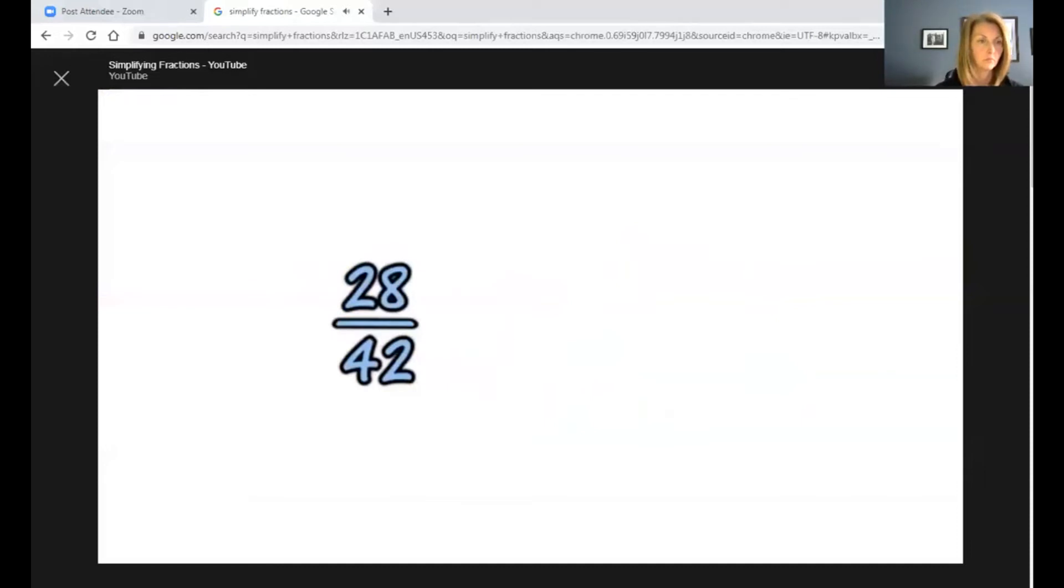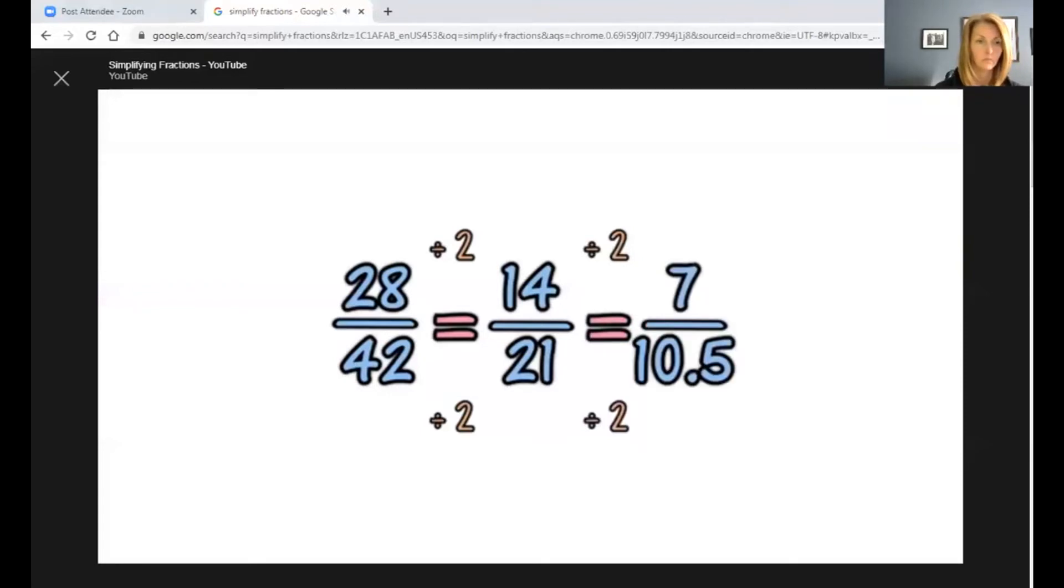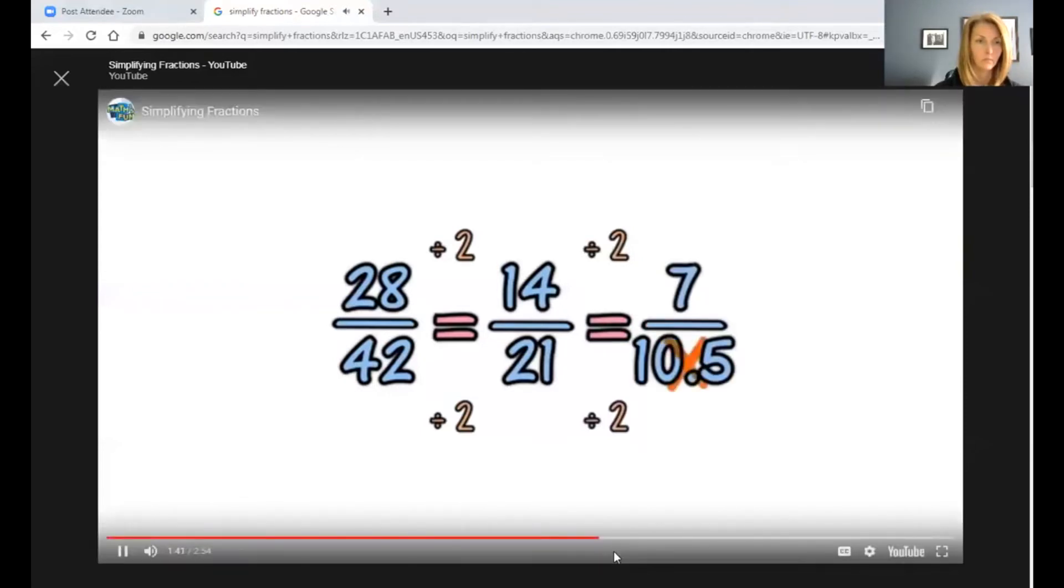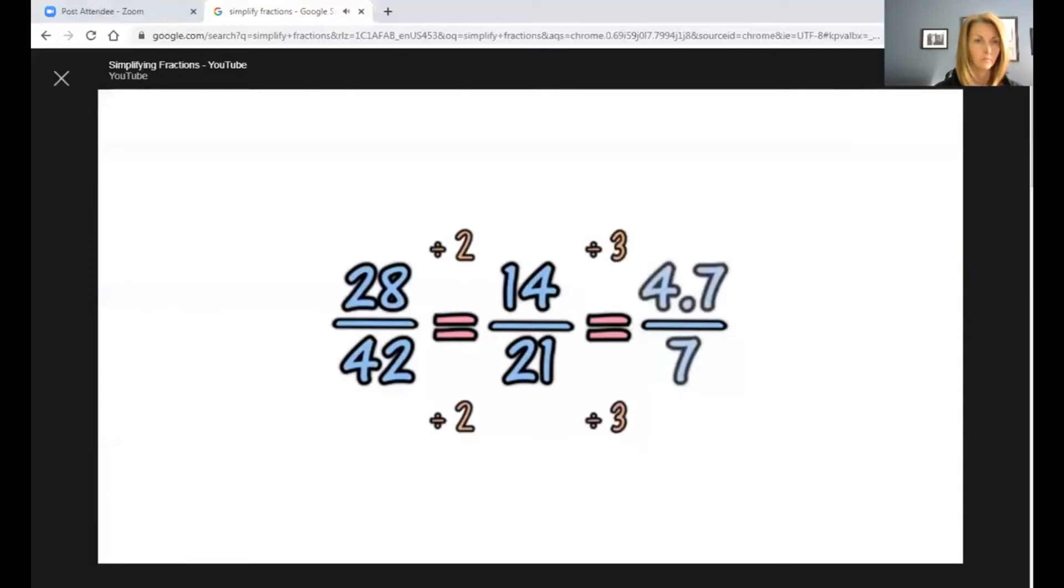Here is another example. Can we divide by 2? Yes. How about 2 again? No, because 21 can't be evenly divided by 2, as you would get 10 and a half. How about 3? No, because 14 divided by 3 doesn't work. How about 5? No. How about 7? Yes. And we are done.